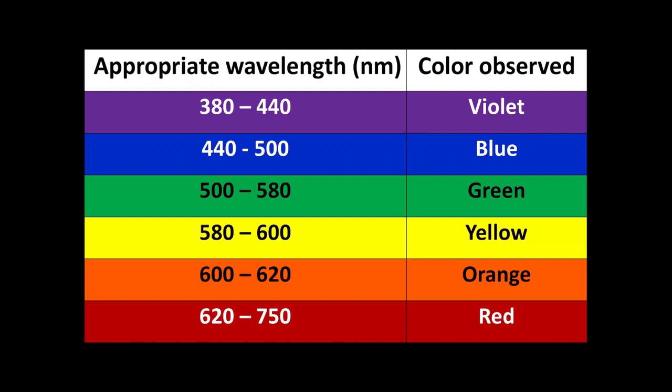The visible color ranges are: 380–440 nm is violet, 440–500 nm is blue, 500–580 nm is green, 580–600 nm is yellow, 600–620 nm is orange, and 620–750 nm is red. Above 750 nm is infrared, and below 380 nm is ultraviolet.